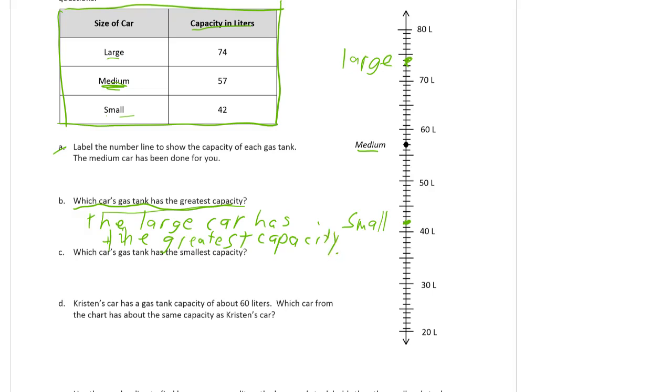Question c: which car's gas tank has the smallest capacity? Well that's going to be the small car. The small car's tank—it's not the car that has the capacity, it's the gas tank that has the capacity—the small car's tank has the smallest capacity.